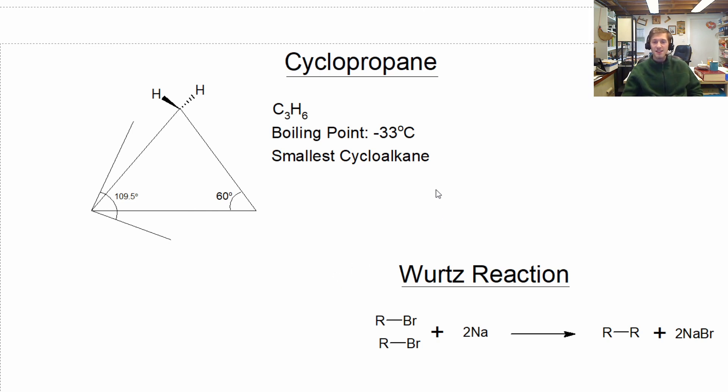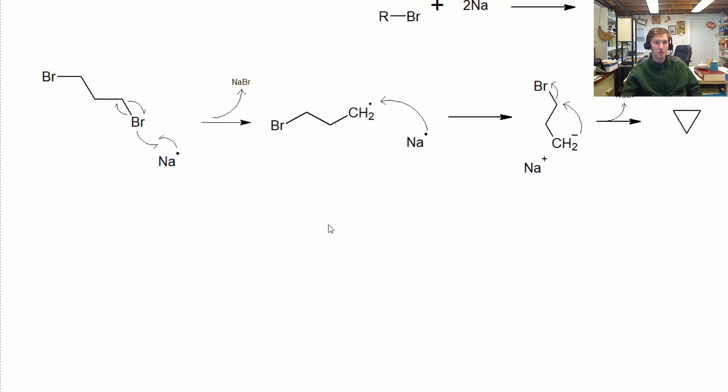Cyclopropane was first prepared in 1881 by the Wurtz reaction. That's a carbon-carbon coupling reaction between two alkyl halides. I put bromine here, but that could be anything. Using metallic sodium. And you can see if these R's were connected to each other and the ends were connected, then we could actually end up forming a ring. And that's exactly what we do in the case of cyclopropane.